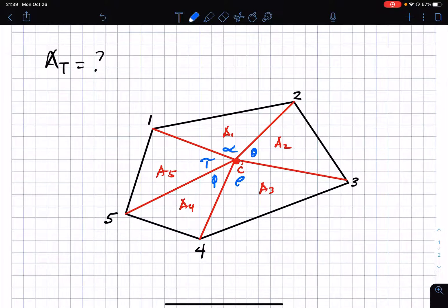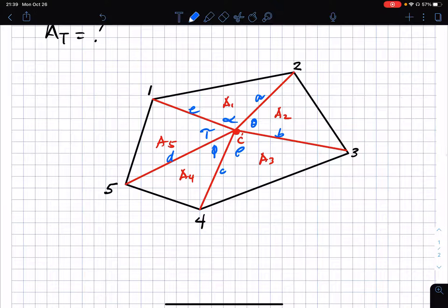By definition, the area of a triangle is one half two sides multiplied by the included angle. So we need some distance here. We call this a, b, c, d, and e.